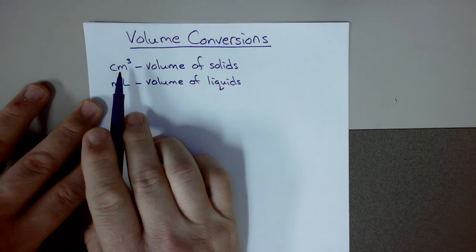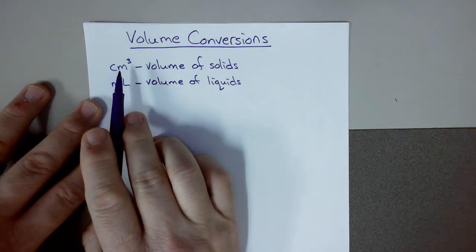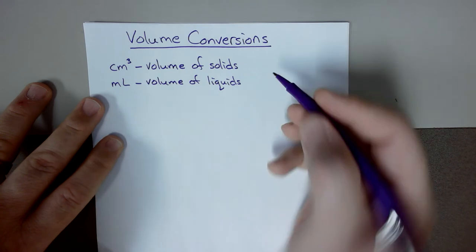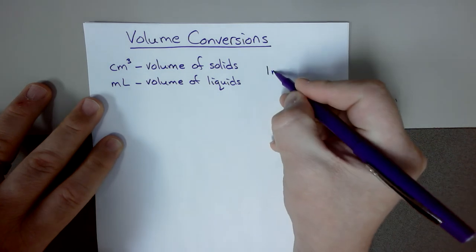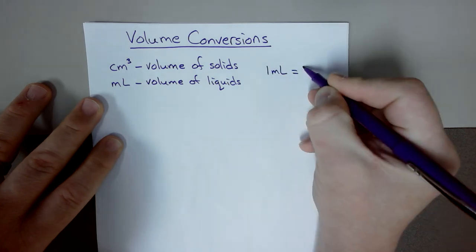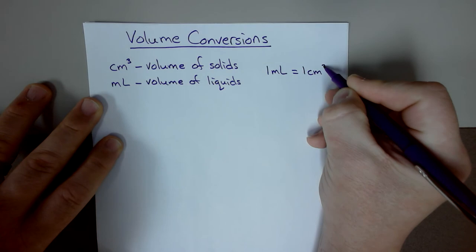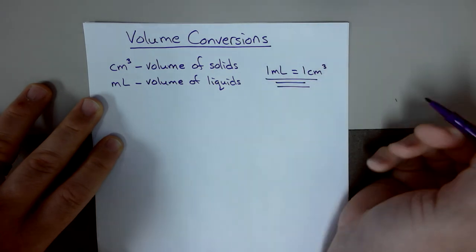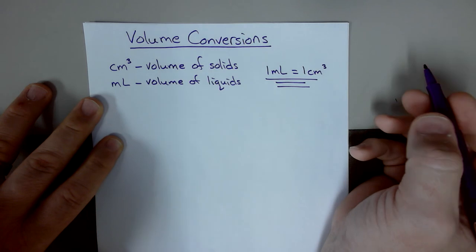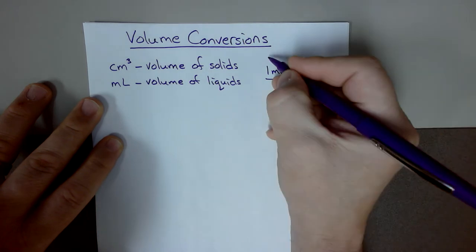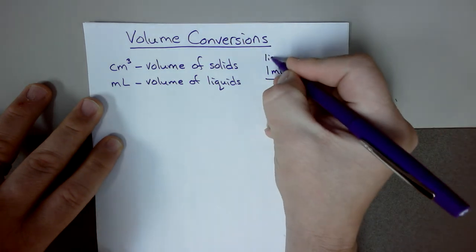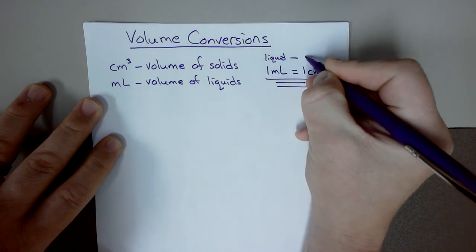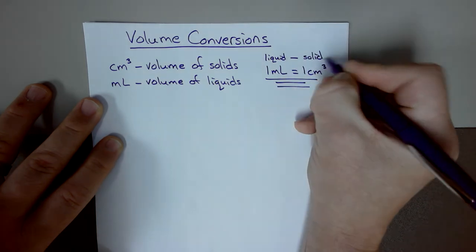A lot of times we have to convert between solid volumes and liquid volumes. Our conversion factor would be: one milliliter is equal to one cubic centimeter. This is something that you need to memorize. We can call this a liquid-to-solid volume conversion.